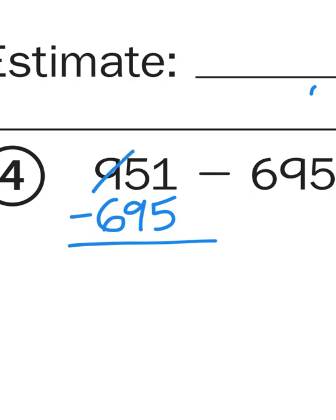I got to borrow a group of 100, making 900s into 800s. I'm going to take my 10 10s, which is 100, and add it to my 5 10s to give me 15 10s. And then I'm going to take away a group of 10, leaving me 14 10s, add my 10 1s to my 1 1, gives me 11 1s.